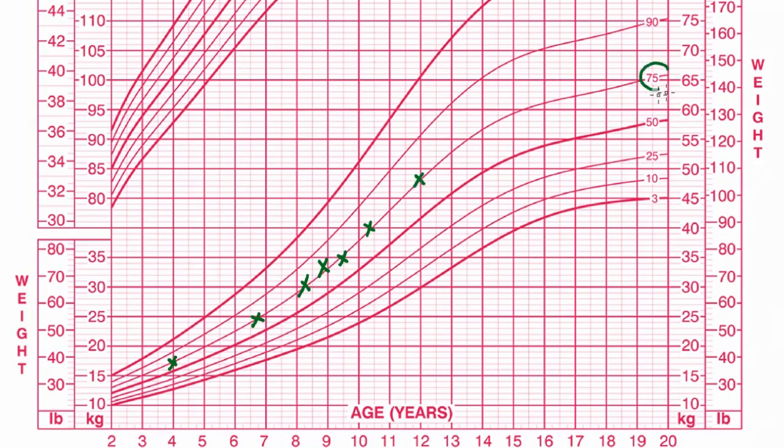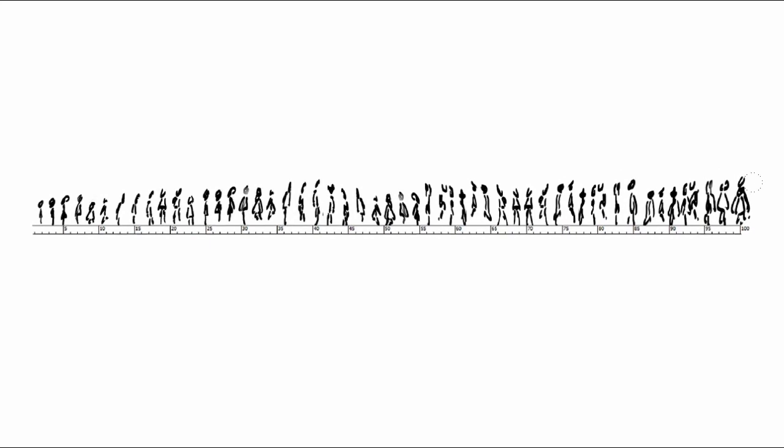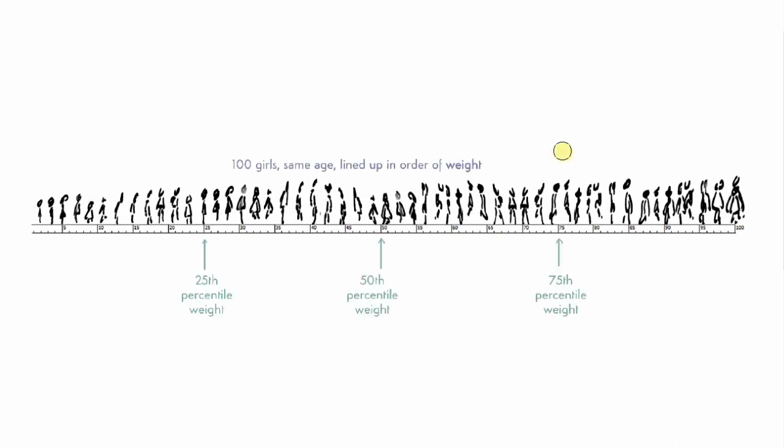the 75th percentile for weight. What that means is if you lined up a hundred girls of that age by order of weight, this girl would be 75th along the line. It means she's part of normal human diversity.